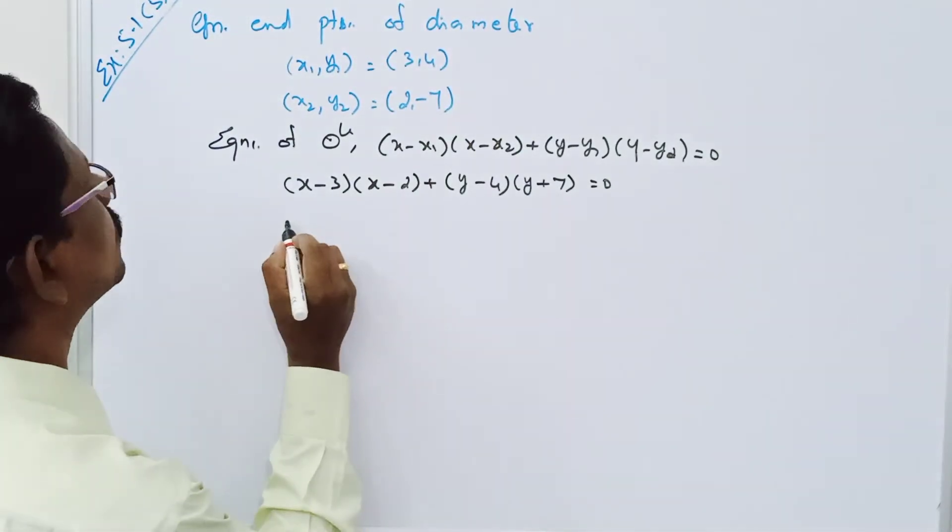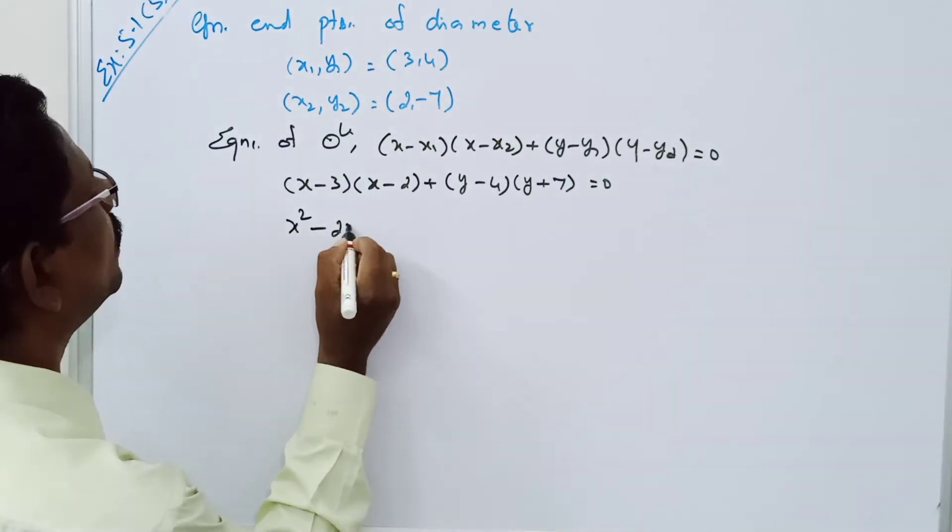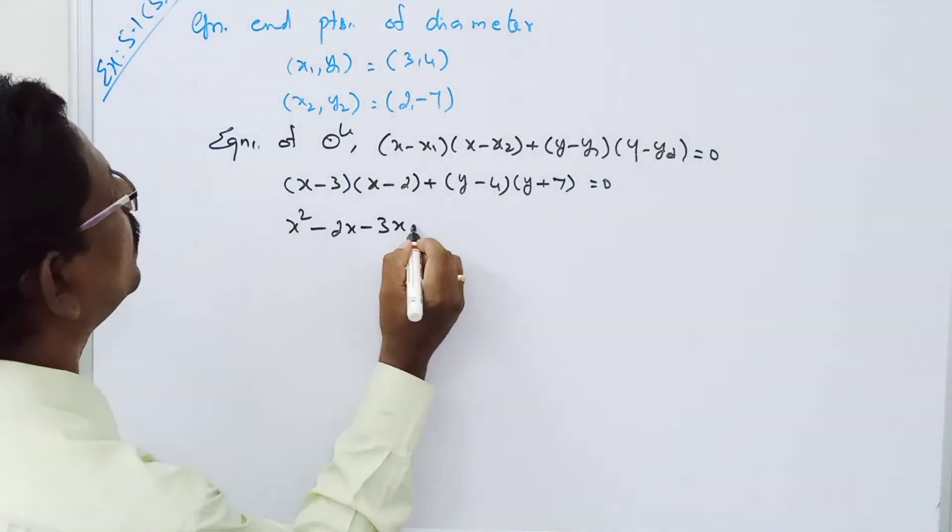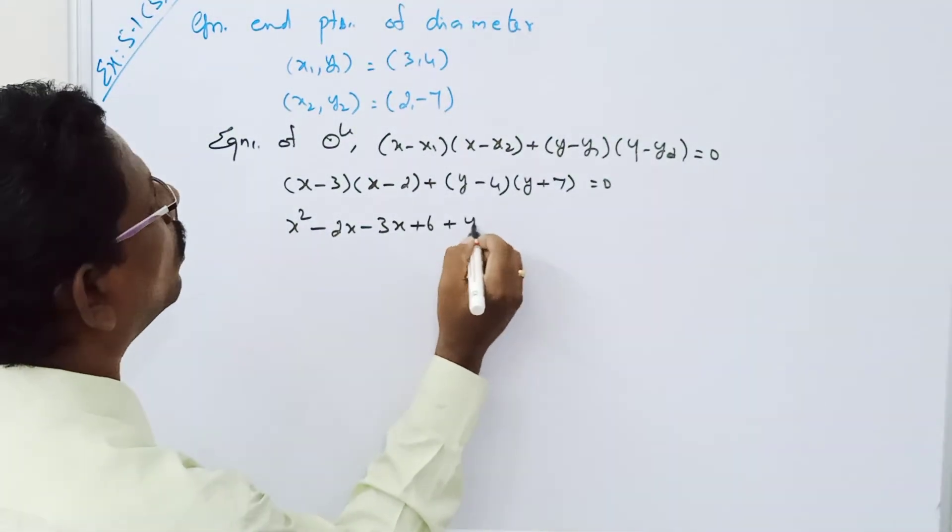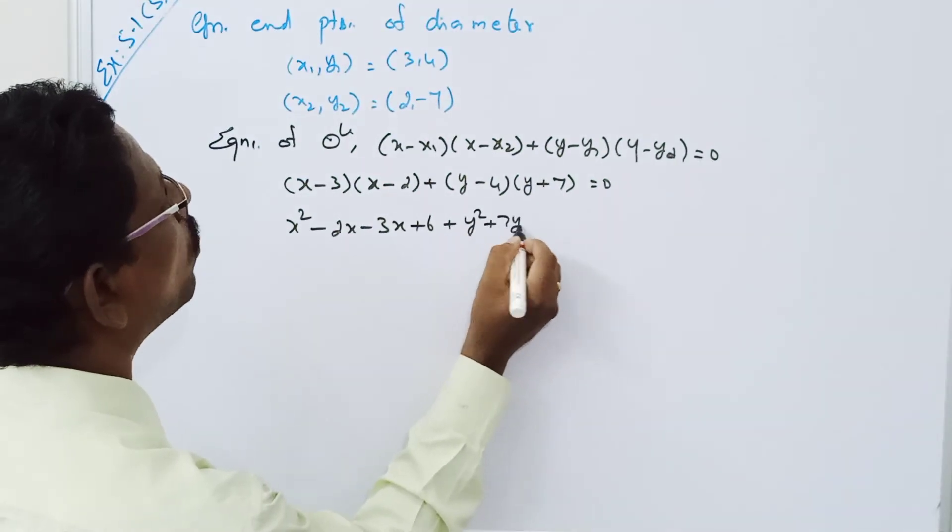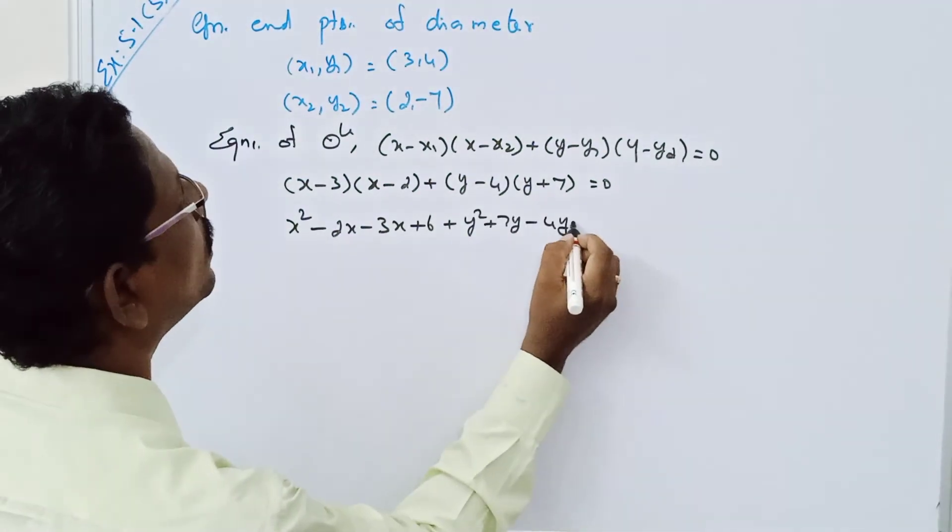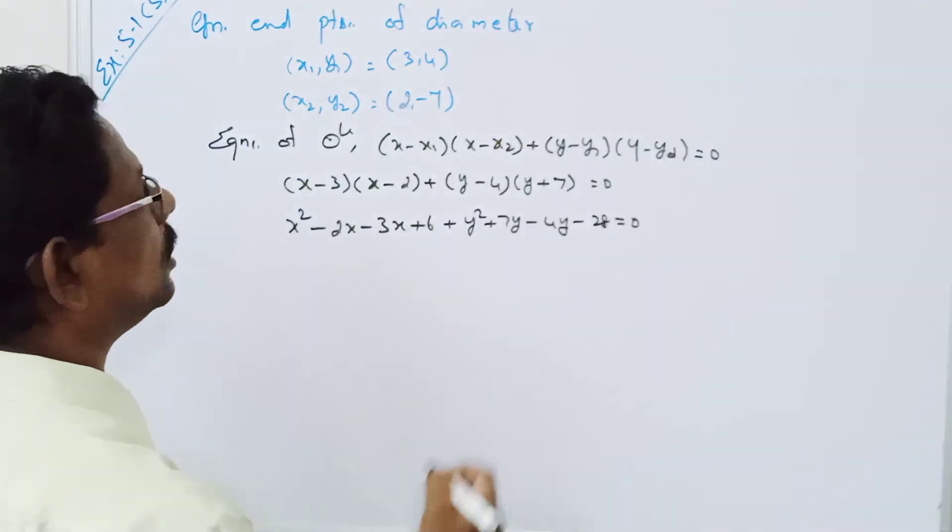Now I am doing multiplication: x² minus 2x minus 3x plus 6, y² plus 7y minus 4y minus 28 equal to 0.